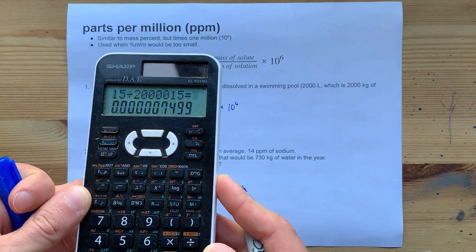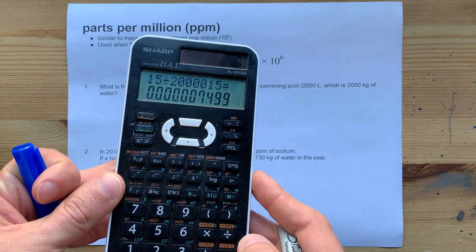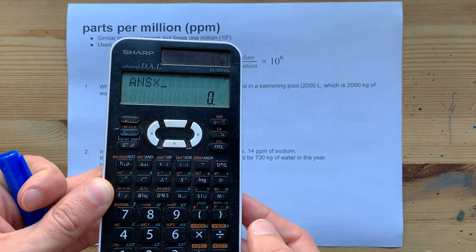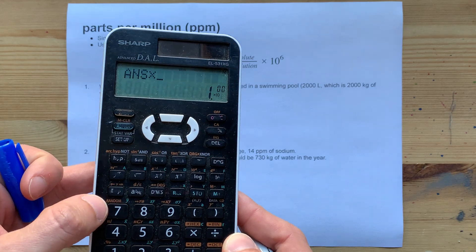Let's do 15 divided by 2,000,000 and 15. That's a tiny, tiny fraction of the mass that is just sodium chloride. And in order to make that a manageable number, I have to multiply it by 1 times 10 to the power of 6.